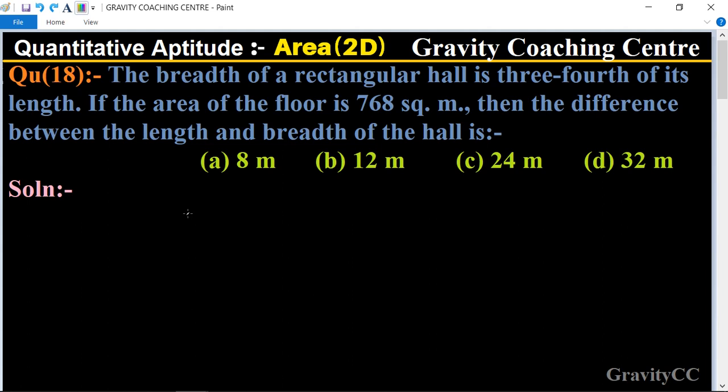difference between the length and breadth of the hall is? In this question, the breadth of the rectangular hall is three-fourths of its length. First, let the length be x, so the breadth is three-fourths of x. According to the question, the area is given as 768 square meters.